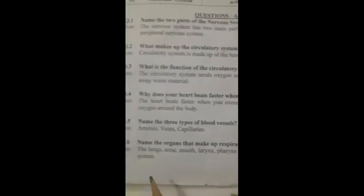Question five: Name the three types of blood vessels. The three types of blood vessels are arteries, veins, and capillaries. Question six: Name the organs that make up the respiratory system. The answer is: the lungs, nose, mouth, pharynx, and trachea make up the respiratory system.